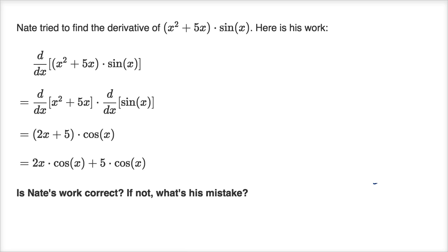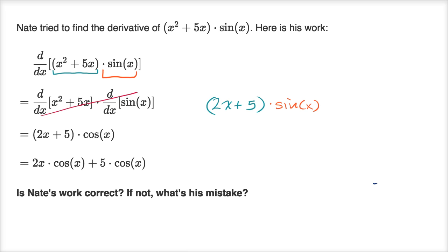So what he should have done: the derivative of the first thing, x squared plus five x, is two x plus five, so it should have been two x plus five times sine of x, and then to that he would add the first thing — x squared plus five x — times the derivative of the second thing, so the derivative of sine of x is cosine of x. So his work is not correct, and his mistake is that he didn't apply the product rule — he just assumed that the derivative of the product is the same thing as the product of the derivatives.